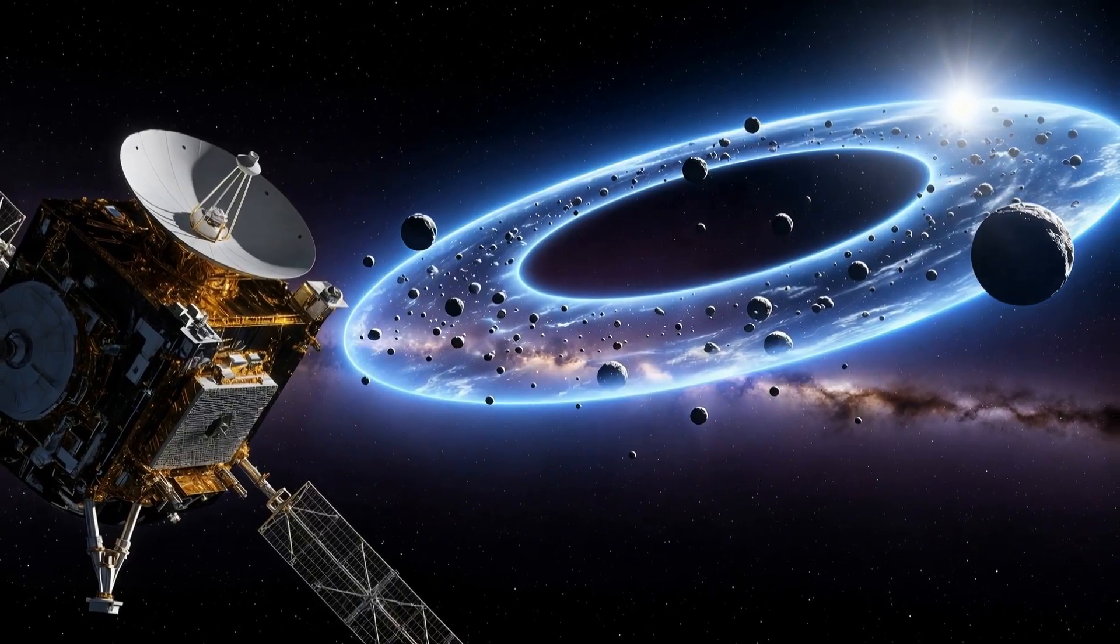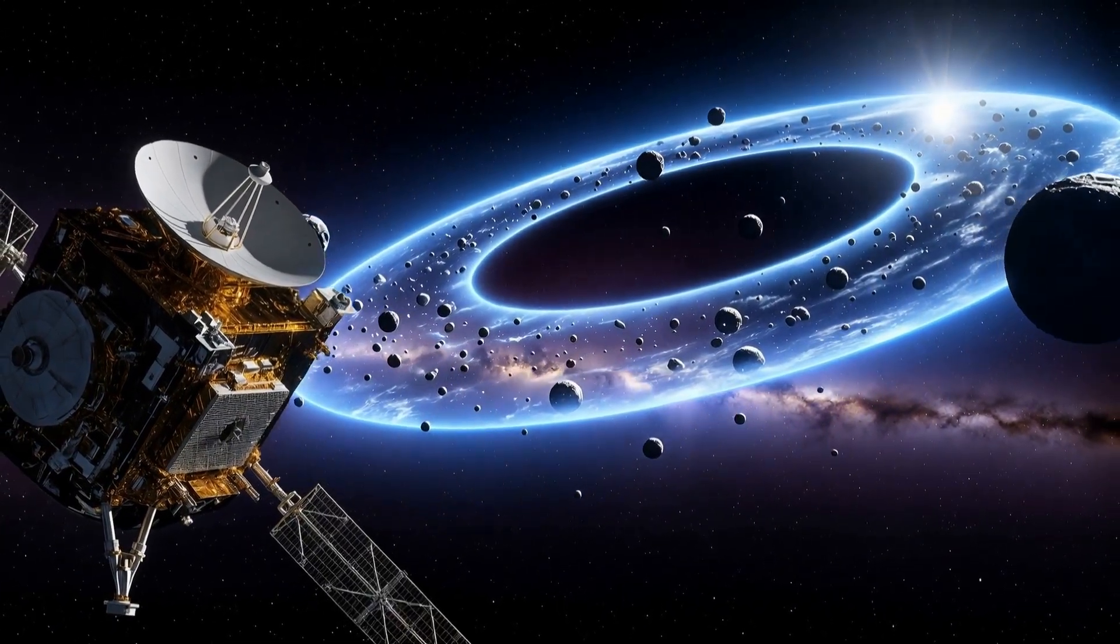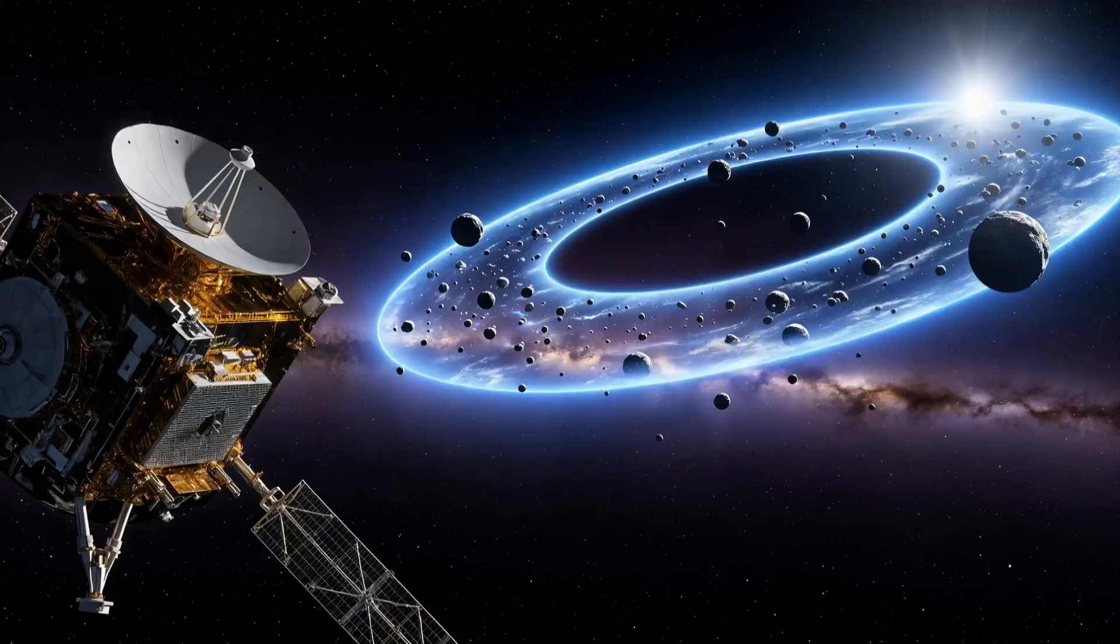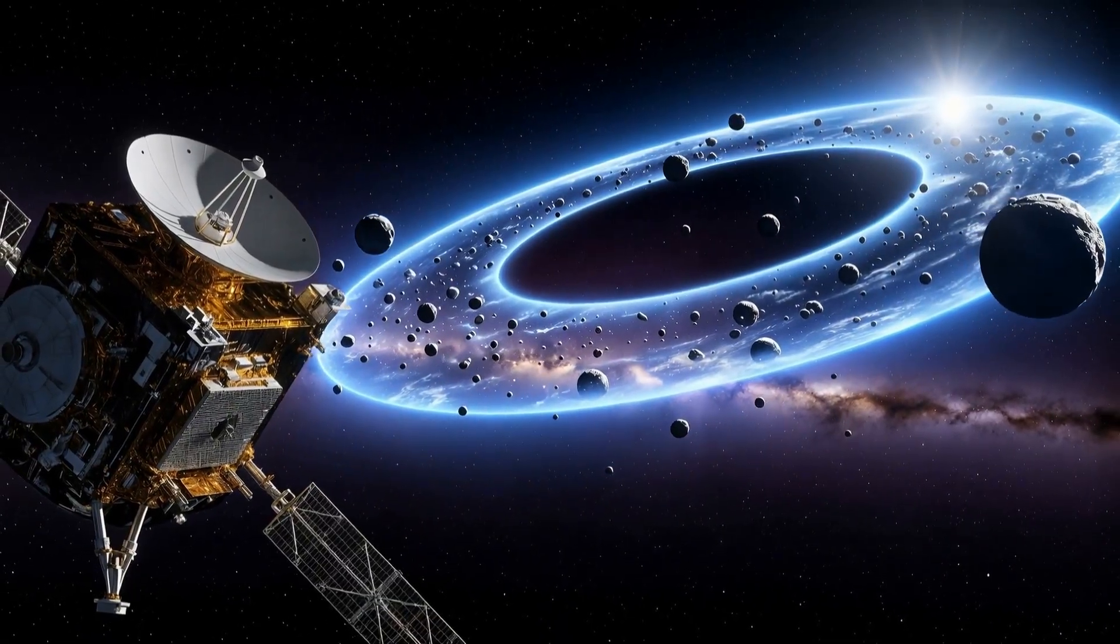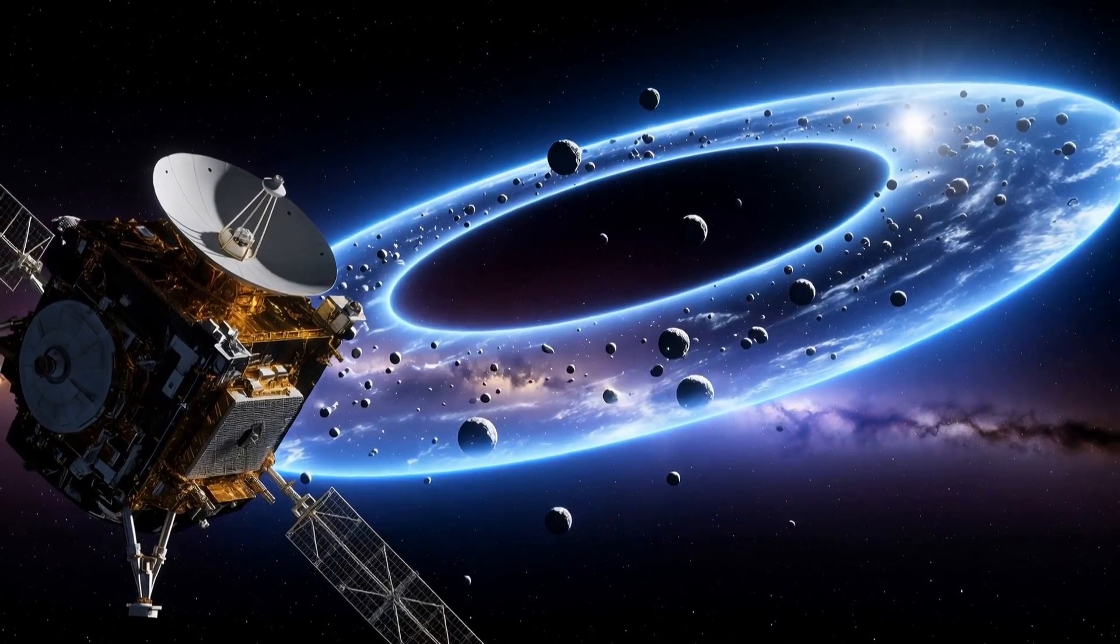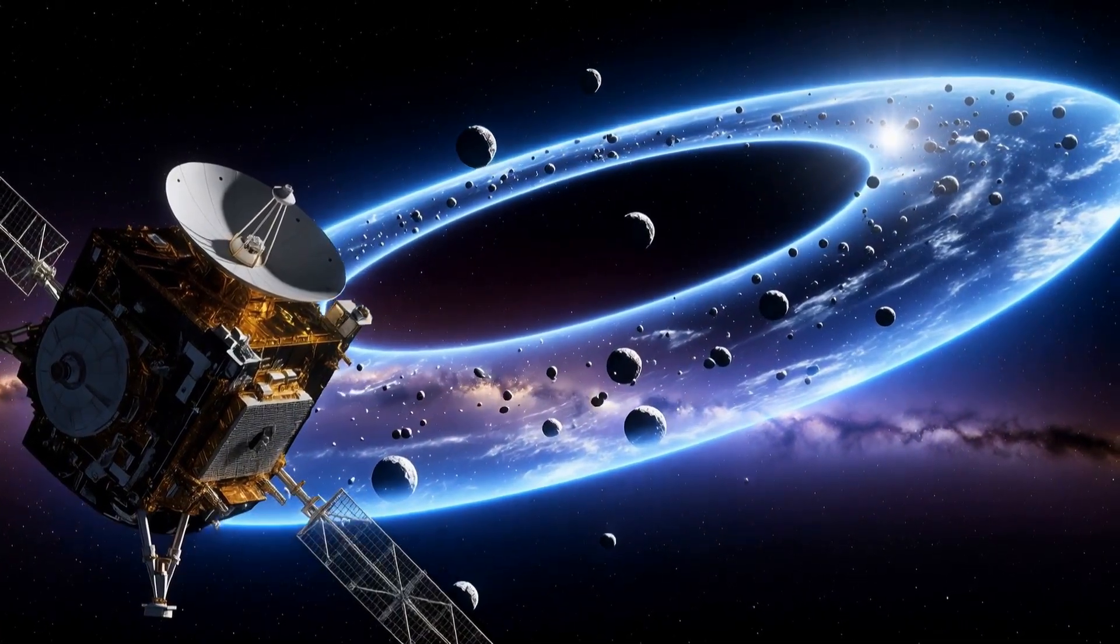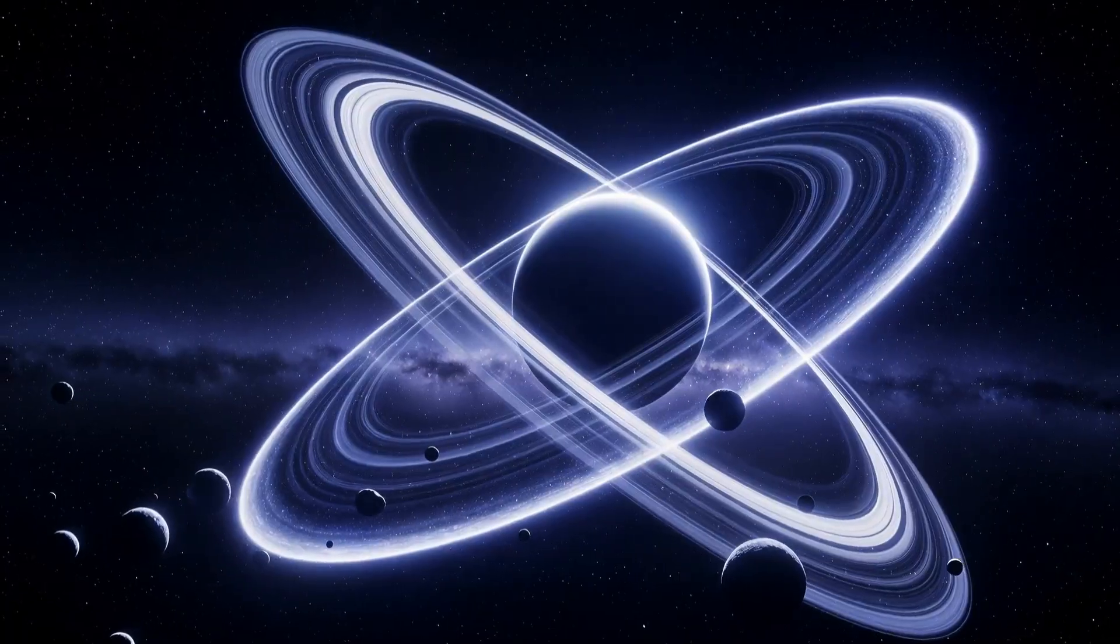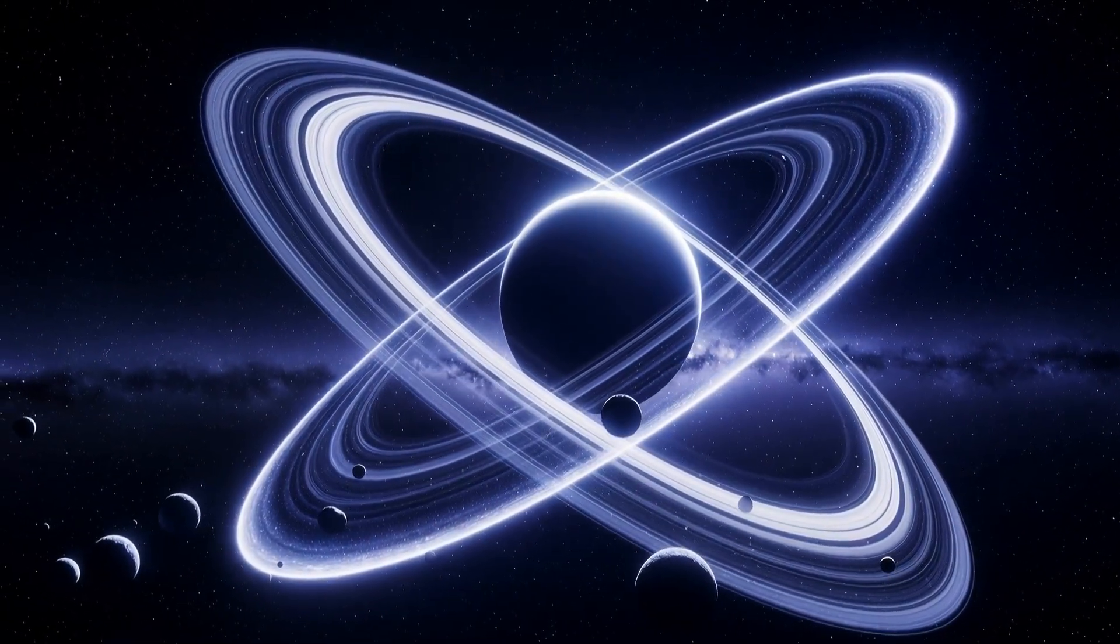While the hunt for Planet 9 continues, our exploration of this dark frontier has already revealed a region far more mysterious than we ever imagined. Data from the New Horizons spacecraft suggests the Kuiper Belt might be more extensive than we thought, possibly showing evidence of objects out to 80 astronomical units or more. Some discoveries even hint at a potential second Kuiper Belt separated from the first by a strange empty gap.